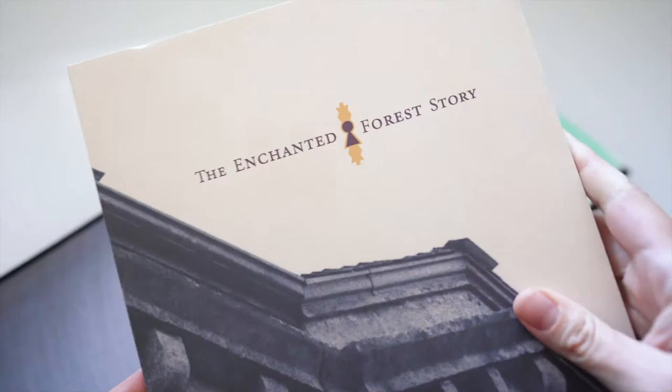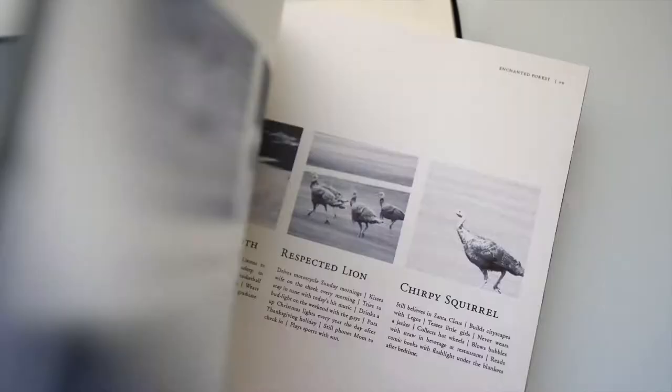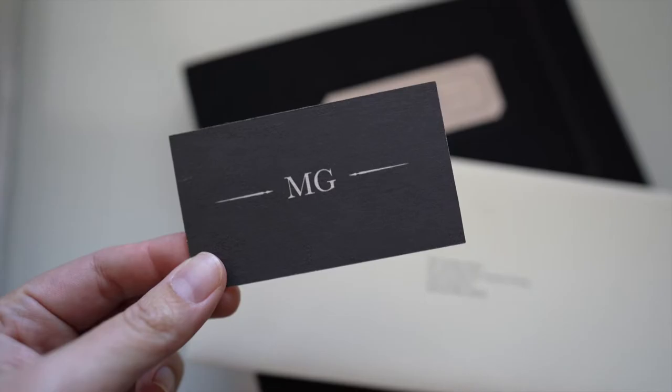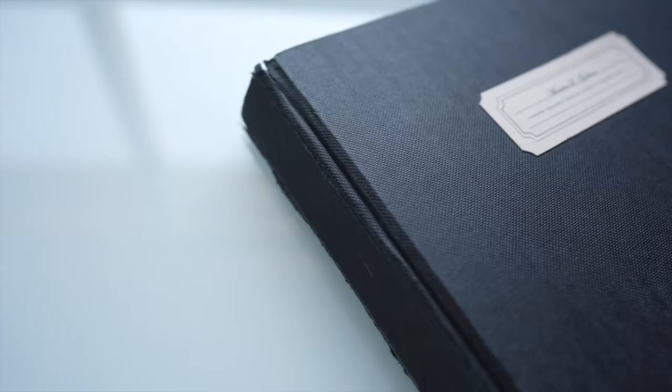The first was to create an identity for a place and create a brand standards guide for it. The second was to create an identity for a thing or an object and the brand standard guide to go along with it. And the third was to create an identity for yourself in how you package the entire thing. Along with the final, we also had to share our creative process journal where we documented our creative process all along the way throughout the semester.